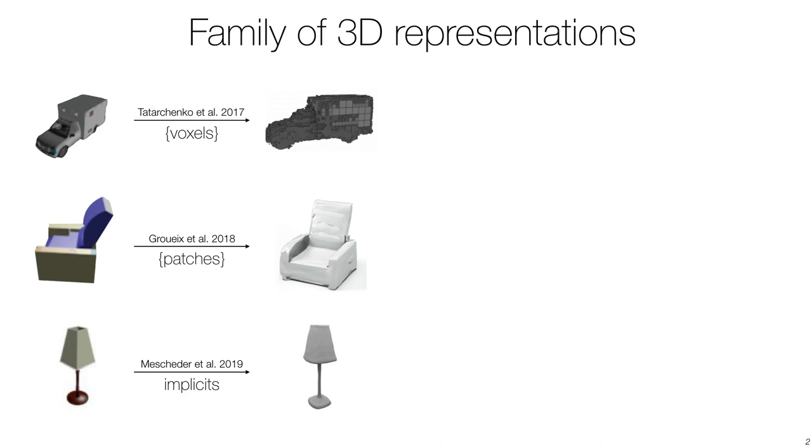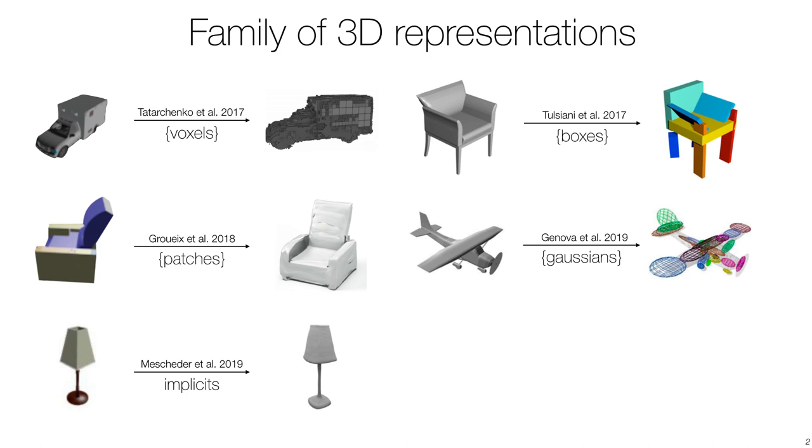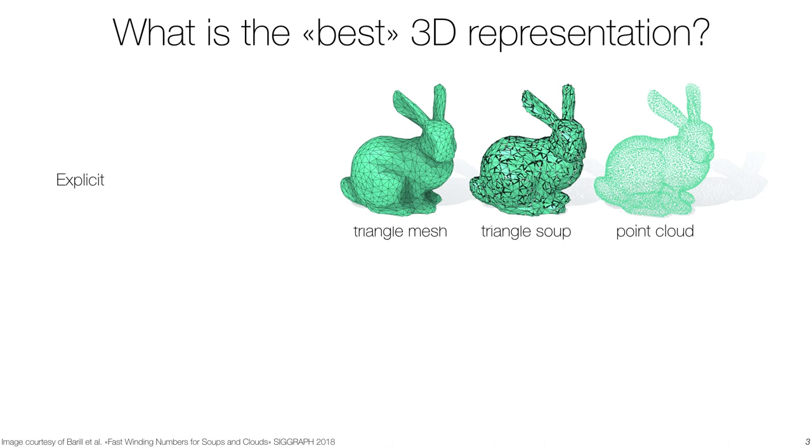While these represent the shape globally, researchers have also proposed the use of primitives, such as oriented boxes and non-oriented Gaussians. Today we introduce the use of convex decompositions as universal approximators of 3D geometry.